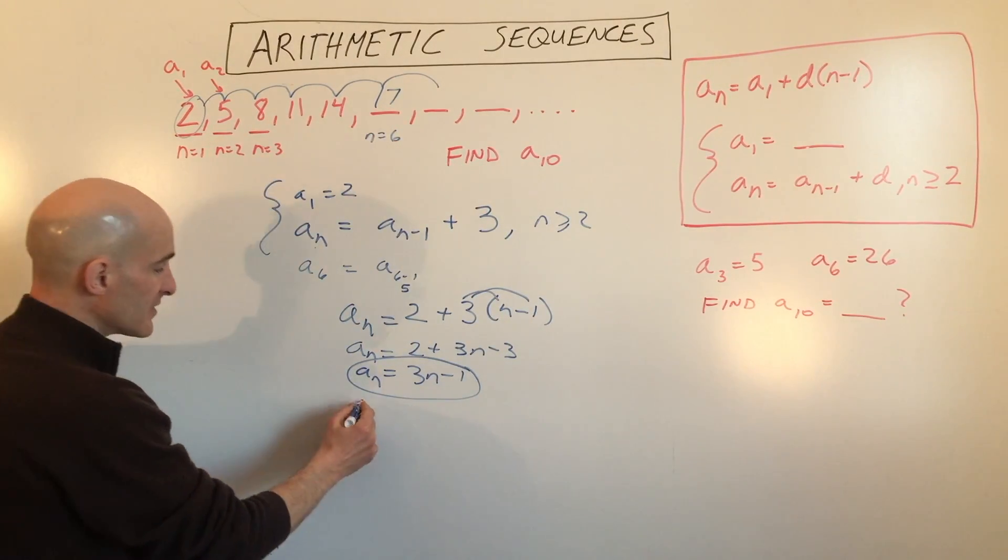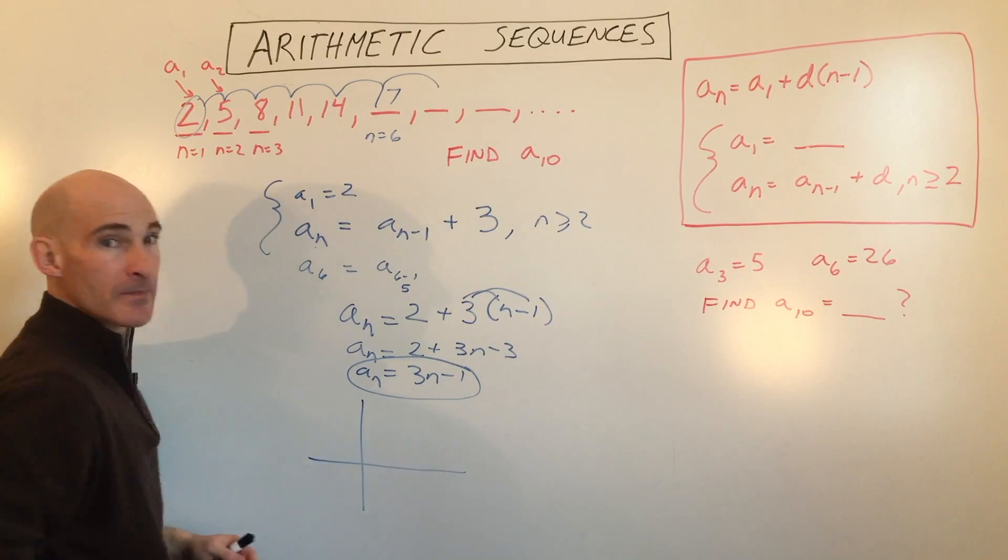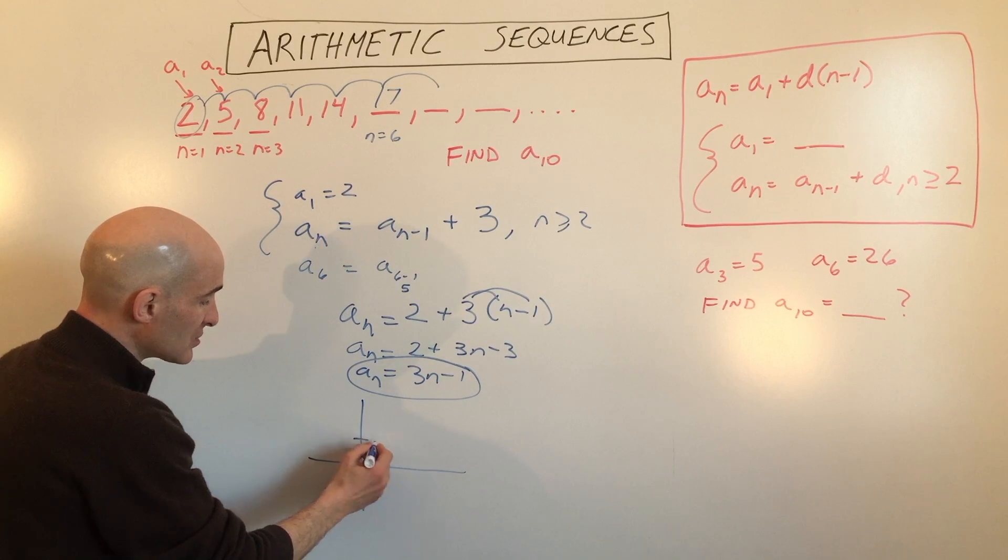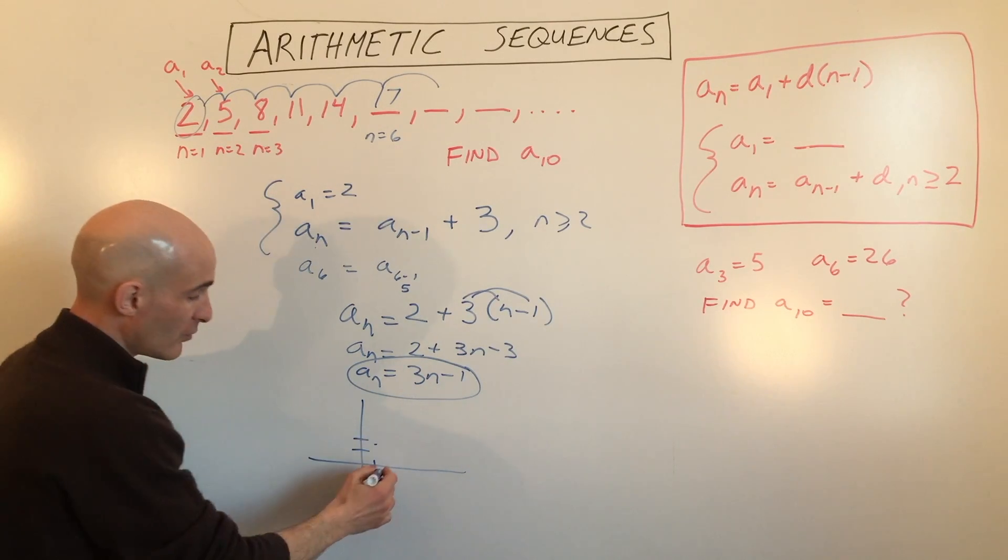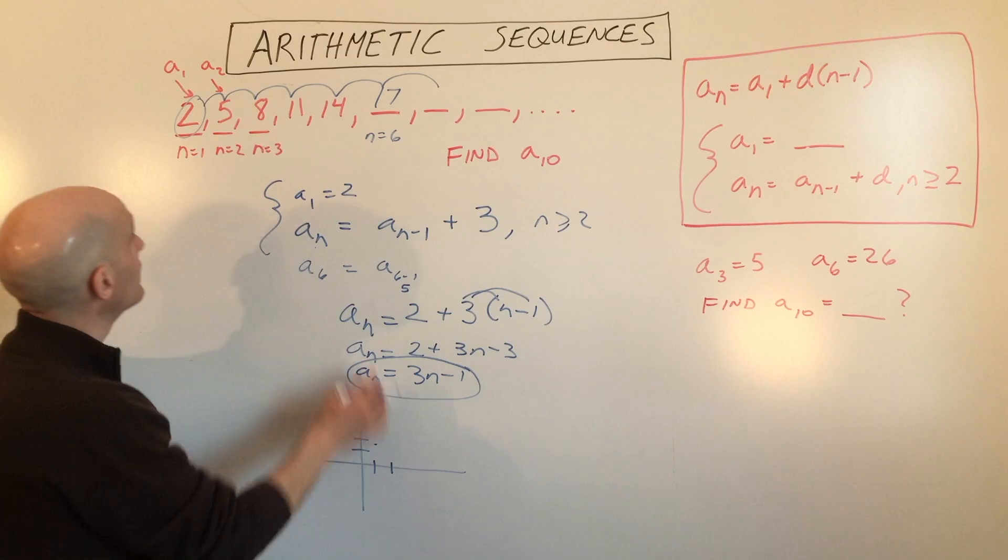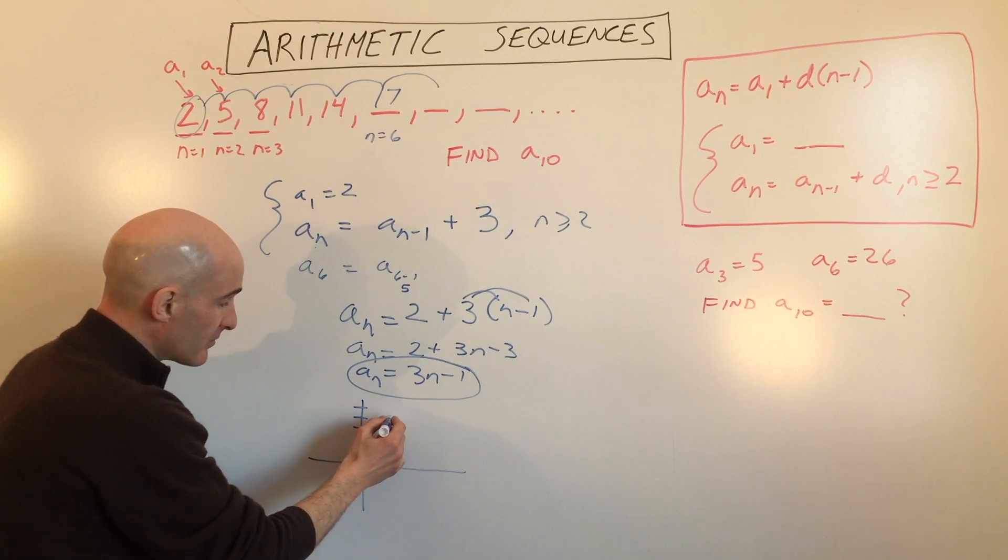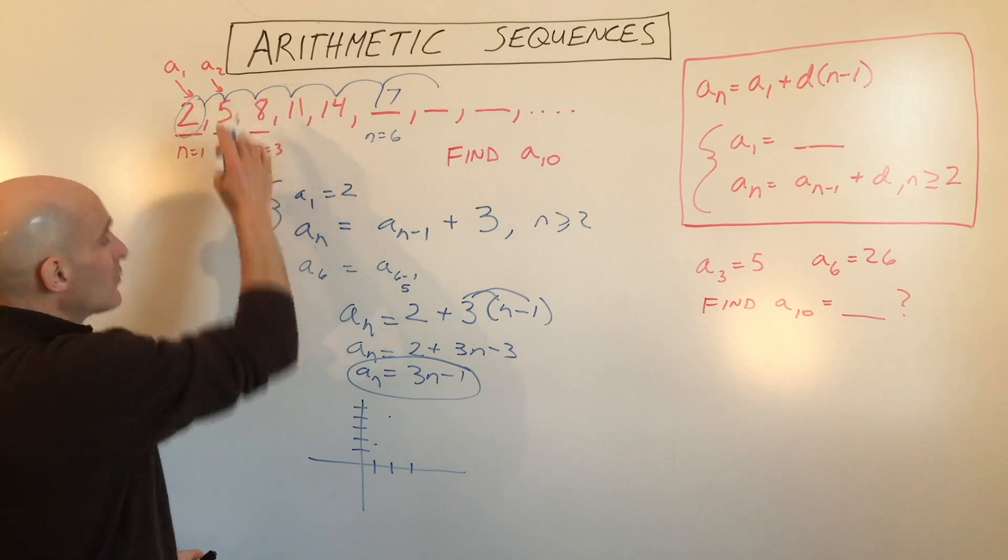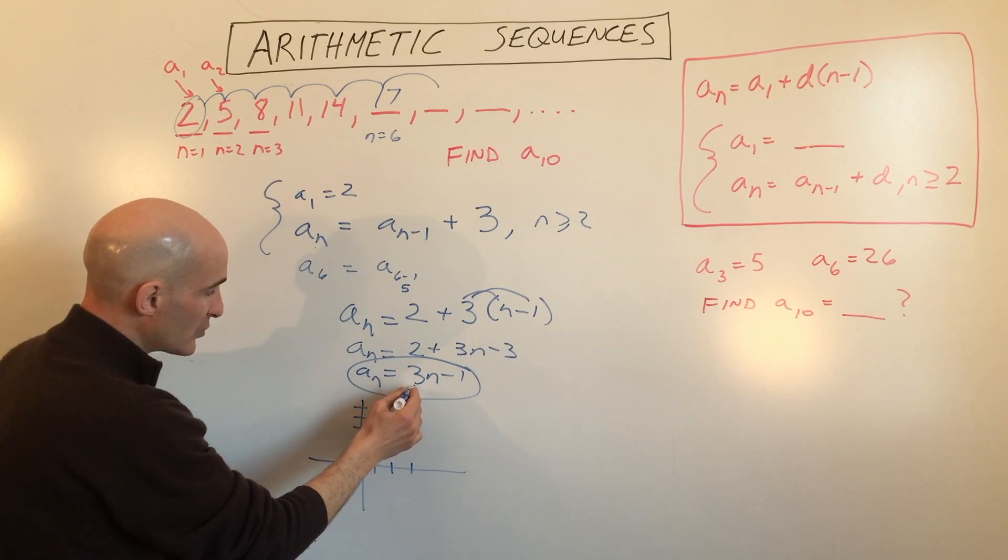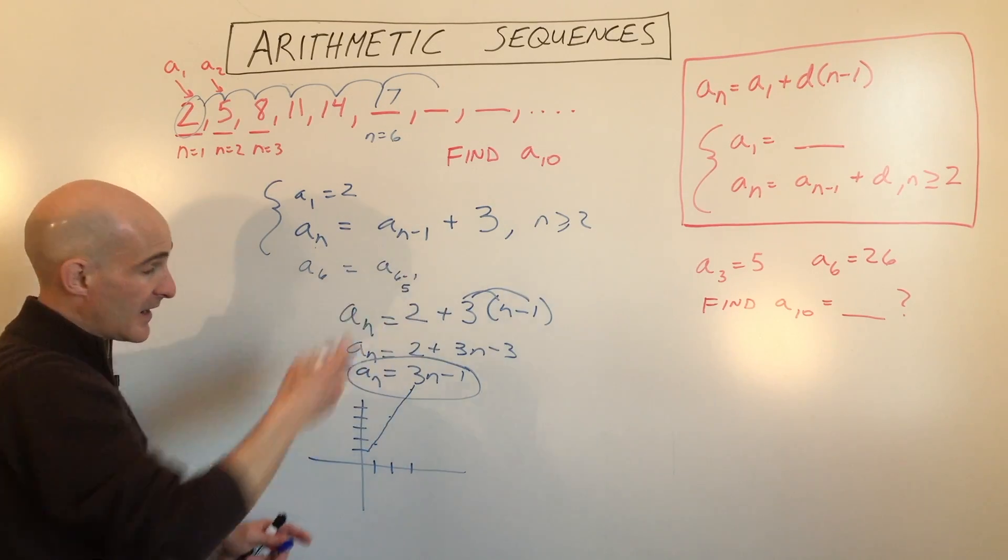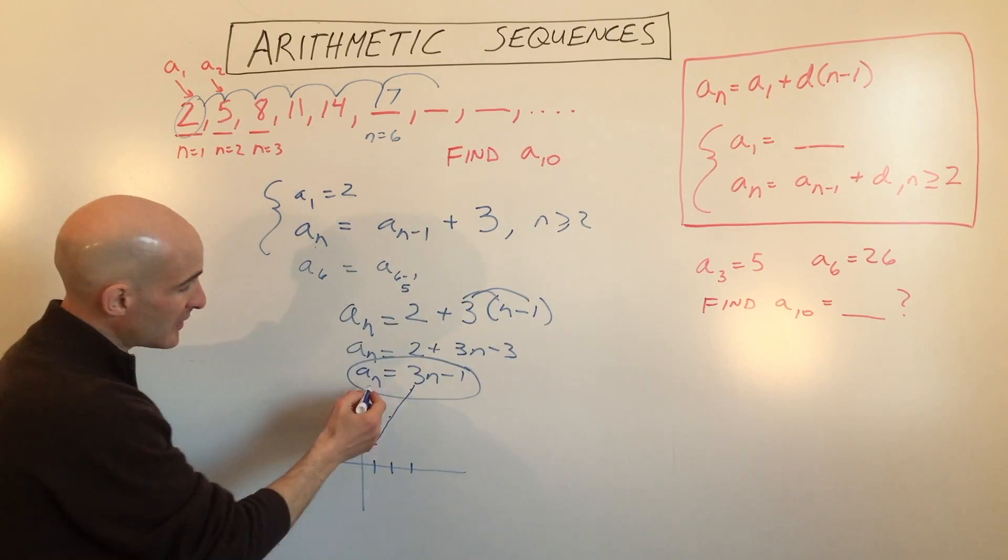If we were to graph these, I make a little grid here. When n equals 1, see how the value of the term is 2? So I'm just going to plot that right there. When n equals 2, the output or the value of the term is 5. If n is 3, we're up here at 8. And what you can notice is that this is forming a straight line. It's linear.